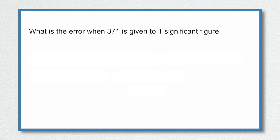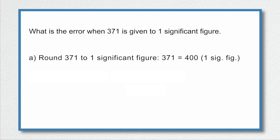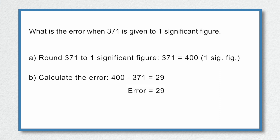What is the error when 371 is given to one significant figure? First, let's round 371 to one significant figure. Well, 371 is equal to 400 to one significant figure. If you're not sure what I've done there, look at the previous video on significant figures. The error is the rounded value subtract the actual value — so that's 400 subtract 371, which is equal to 29. So there's our error of 29.